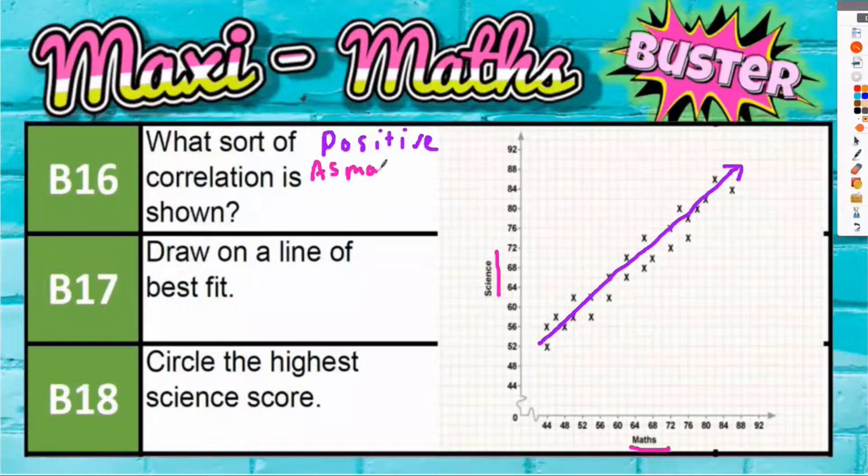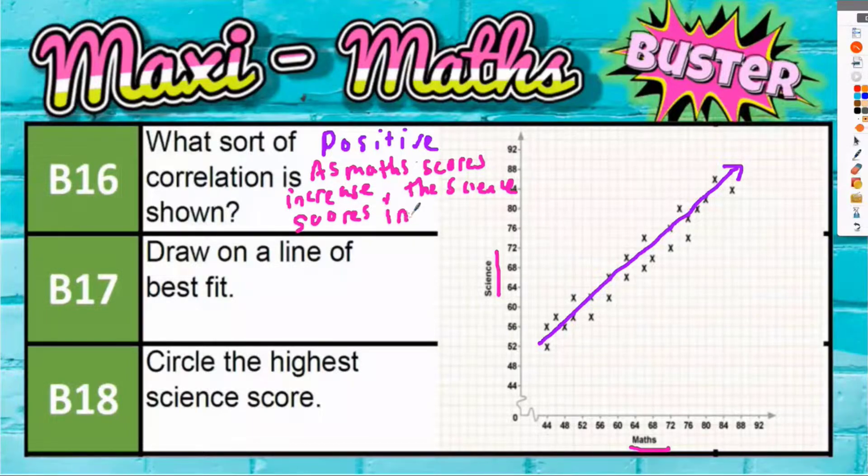So that means they also increase. As math scores increase, the science scores increase. Positive correlation. And that is probably what you would expect, because people who tend to be good at maths also tend to be good at science and vice versa.